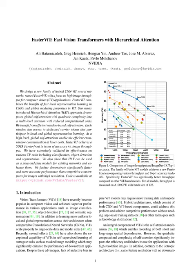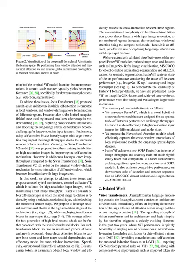The SWIN transformer was proposed to address these issues by introducing a multi-scale architecture. Here, self-attention is computed in localized windows and window shifting is used to allow different regions to interact. But it wasn't a complete solution: due to the limited receptive field of local regions and the small coverage area of window shifting, modeling long-range spatial dependencies becomes challenging, particularly for large-resolution input features. Another issue arises when using self-attention blocks early on, as this can impact image throughput due to the increased number of local windows.